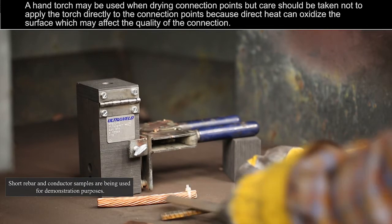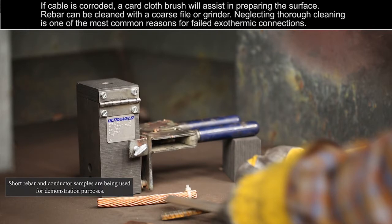A hand torch may be used when drying connection points, but care should be taken not to apply the torch directly to the connection points, because direct heat can oxidize the surface, which may affect the quality of the connection.